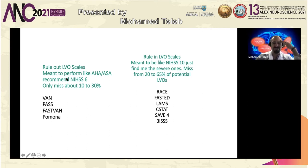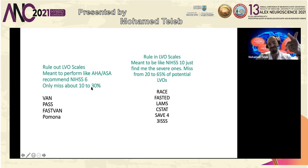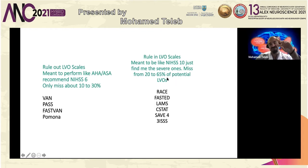Rule-out LVO scales: the qualitative ones are more like an NIHSS of 6 — they miss about 10 to 30 percent but are less specific and more sensitive. The quantitative ones try to be more like an NIHSS of 10 — they miss 20 to 65 percent but are more specific. All of these classic ones are really rule-in versus rule-out scales.